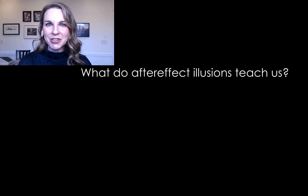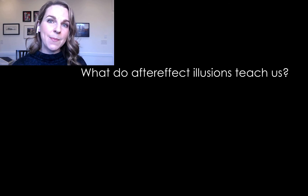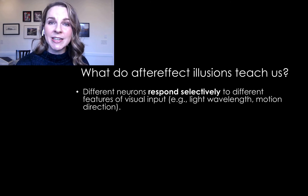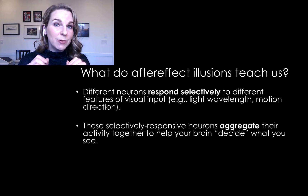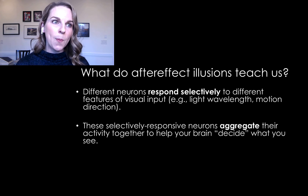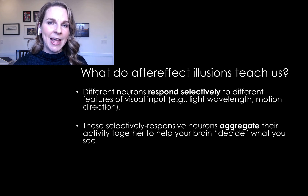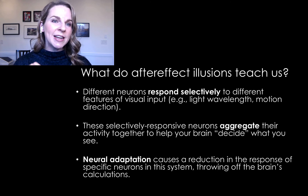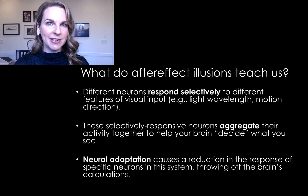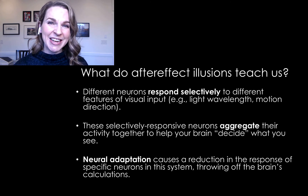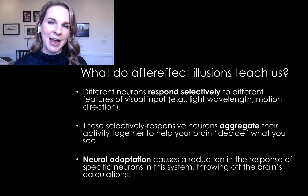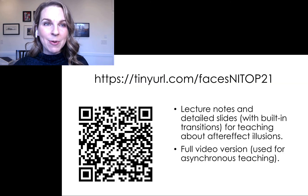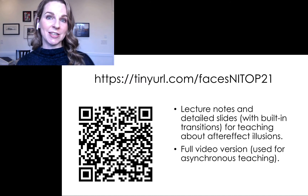These aftereffect illusions teach us really interesting things about the nervous system and especially about the visual system. They teach us that different neurons in our brain respond very selectively to different features of visual input, like light wavelengths or motion in particular directions. They also teach us that these selectively responsive neurons aggregate their activity together to help our brains decide what we see. And critically, a process called neural adaptation can cause a reduction in the response of specific neurons, which can throw off our brain's calculations. If you're feeling a little confused, don't worry — that's pretty normal, and it takes a while to fully grasp how these aftereffect illusions work.